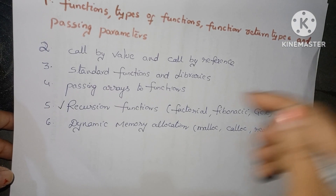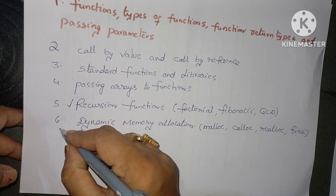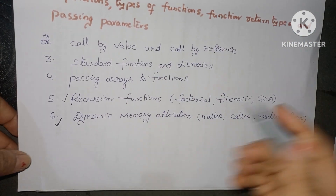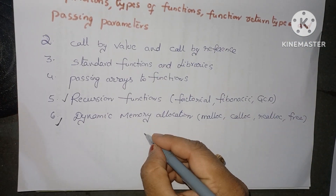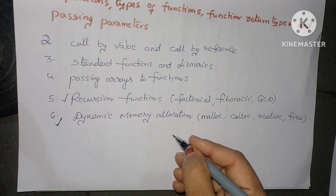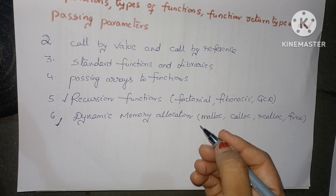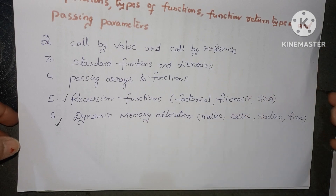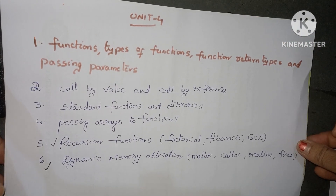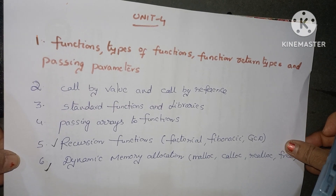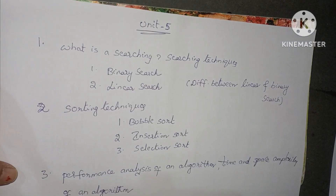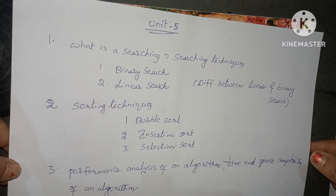Next very important question is dynamic memory allocation. Dynamic memory allocation, preprocessor directives, enum, storage classes, and type conversion are all very important questions. These are all the important questions in Unit 4.